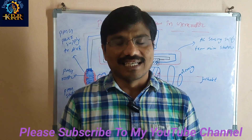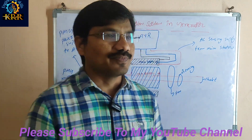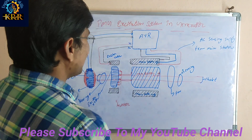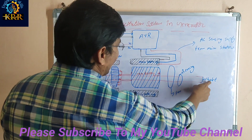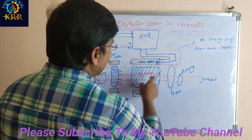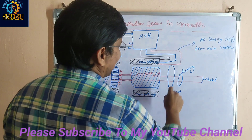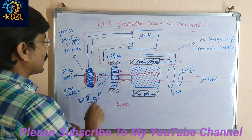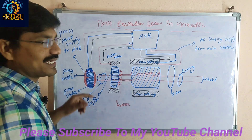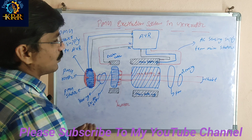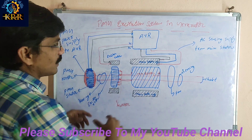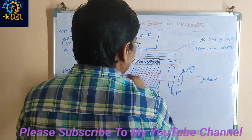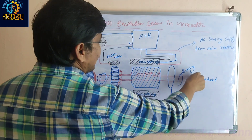In the PMG excitation system, there is one main shaft. On this shaft, they are connected: a bearing, a fan, the main rotor, the exciter rotor, and the permanent magnet PMG rotor. This shaft is rotating with the help of an engine.